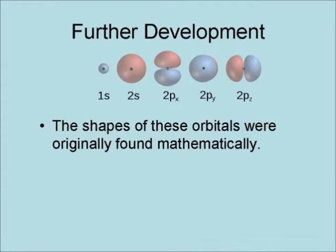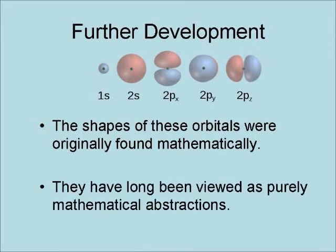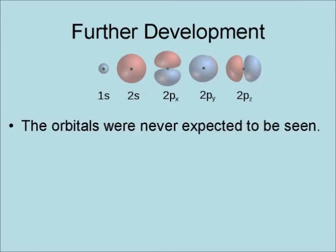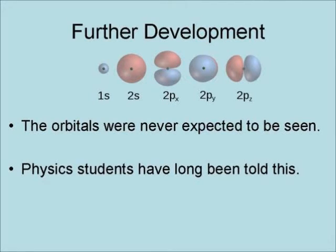The shapes of these orbitals were originally found mathematically. They have long been viewed as purely mathematical abstraction. The orbitals were never expected to be seen. Physics students have long been told this.